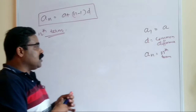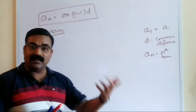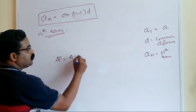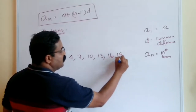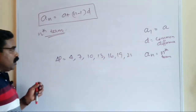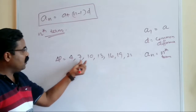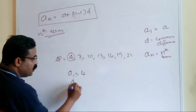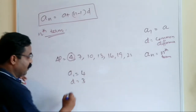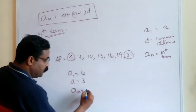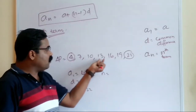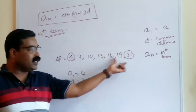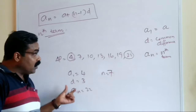For example, consider the AP: 4, 7, 10, 13, 16, 19, 22. The common difference is 3. So a₁ = 4, d = 3, and aₙ = 22 (the last term). There are 7 terms, so n = 7. Remember: n is how many terms there are (here 7), while aₙ is the nth term itself (here 22).